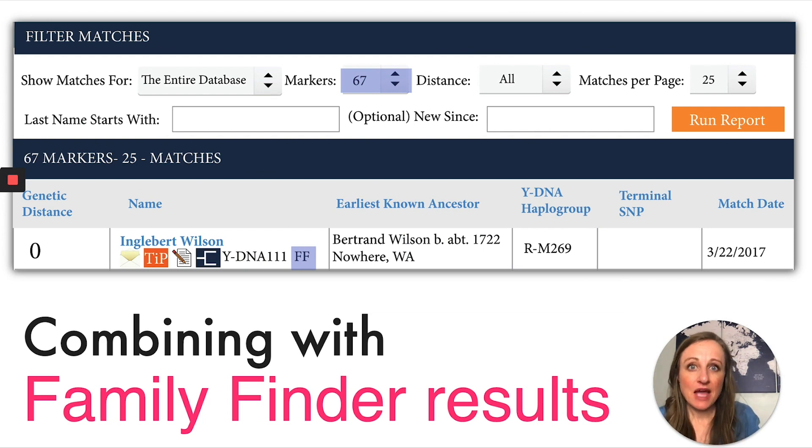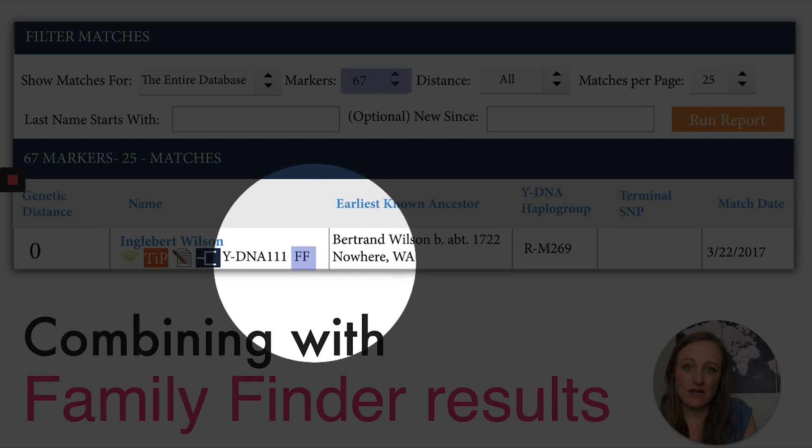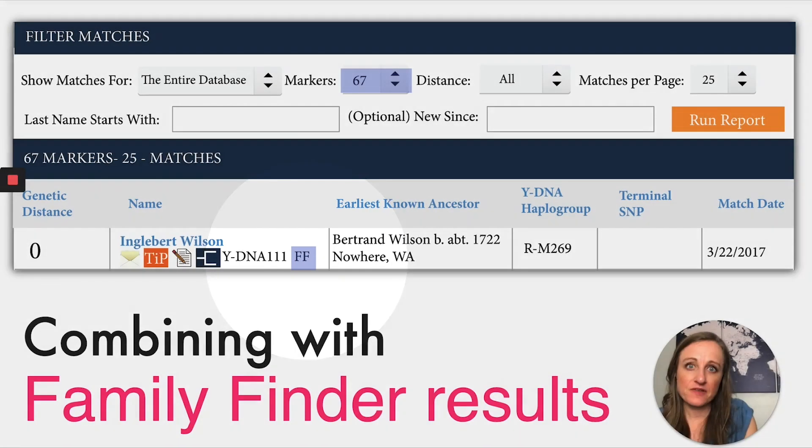Additionally, you can see if a match has taken the family finder test and you see that right here in this FF. FF means family finder, which is the autosomal DNA test at Family Tree DNA. If someone's taken an autosomal DNA test, you can go look for this match on your autosomal DNA match page. If they're not there, it likely means you're related to them more distantly than fourth cousins. If they are on your autosomal DNA match list, your autosomal DNA will give you a much better idea of when you should be looking for your common ancestor. For example, it may say your second cousins, in which case you'll know more about how to look for your relationship.